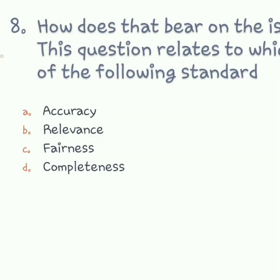Question number eight: we talked about the standards of critical thinking. Under each standard we ask certain questions. If in an argument you ask 'how does that bear on the issue,' which standard does that refer to? The answer is relevance — you want to know if what the speaker is saying is related to the topic and discussion. So B is the answer. Take note as you might see this in your end-of-sem or mid-sem.